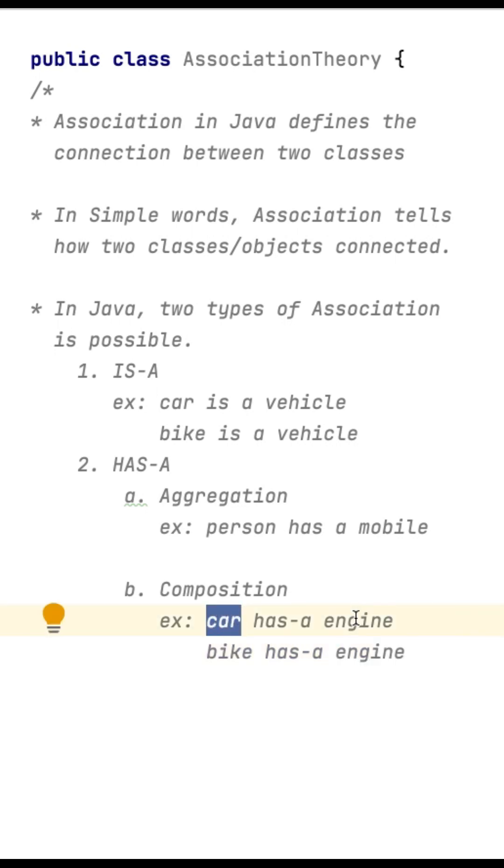That means in composition, one object can exist only when the other object exists, or else it will not exist. But in aggregation, it is not like that. One person can exist even when the other object exists or not.